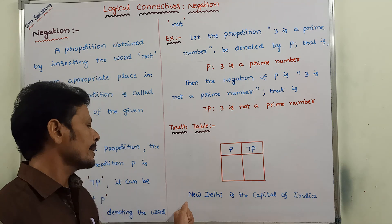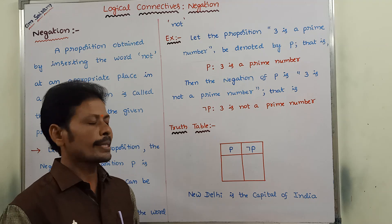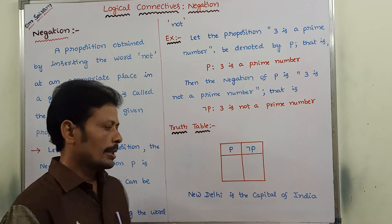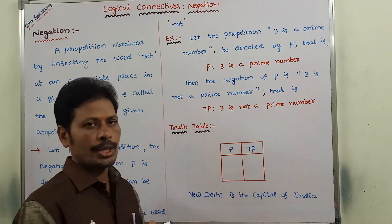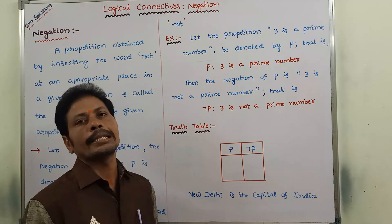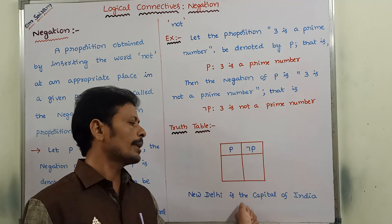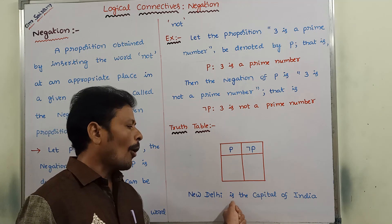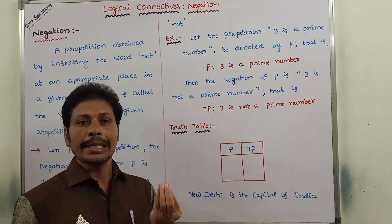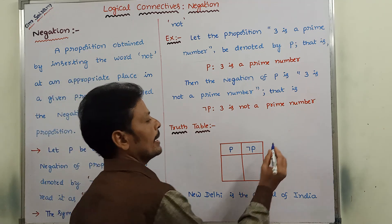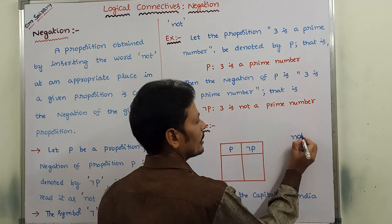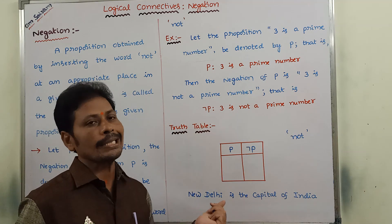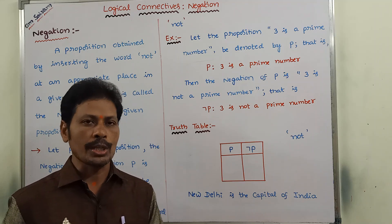Let us consider a proposition such as 'New Delhi is the capital of India.' How to get the negation of that proposition? The negation of this proposition can be obtained by inserting the word 'not' at an appropriate place in the given proposition.